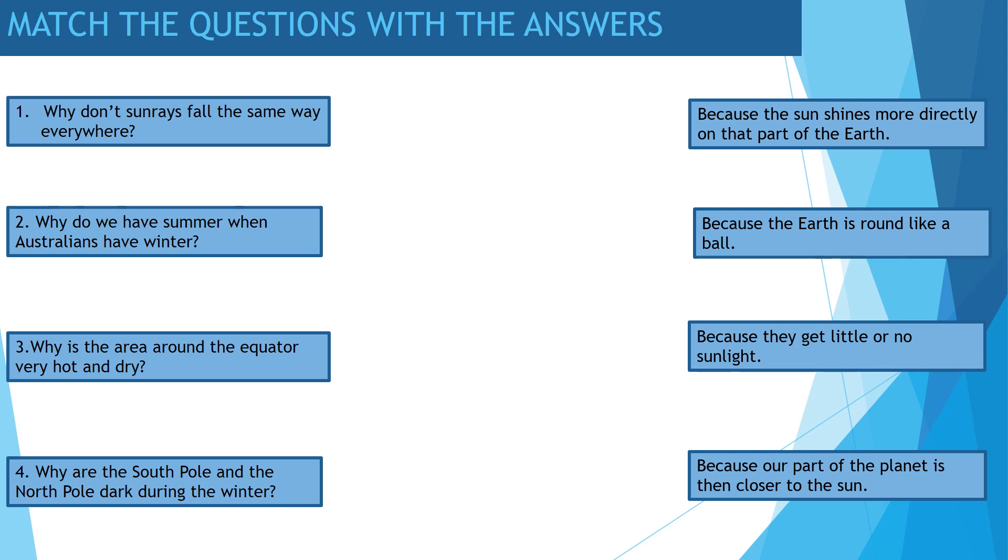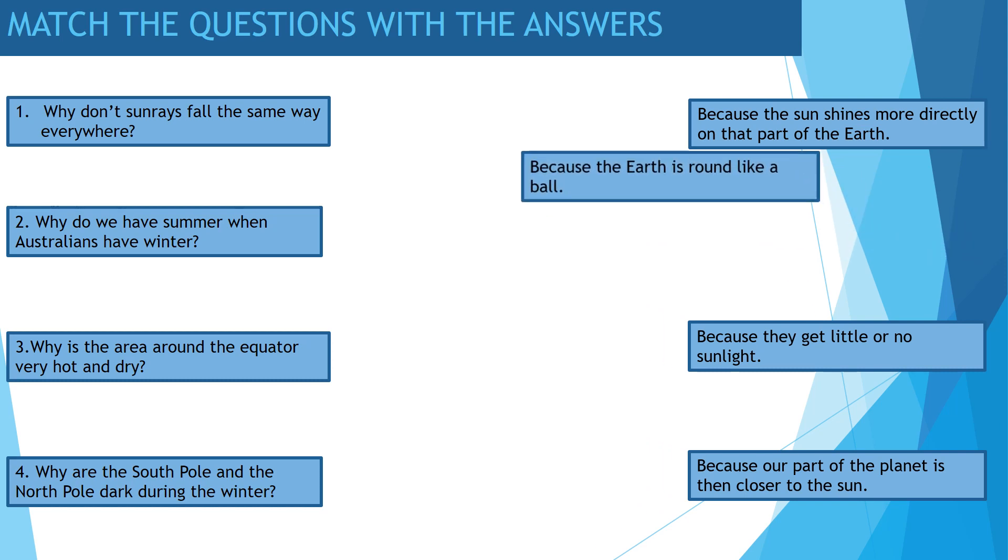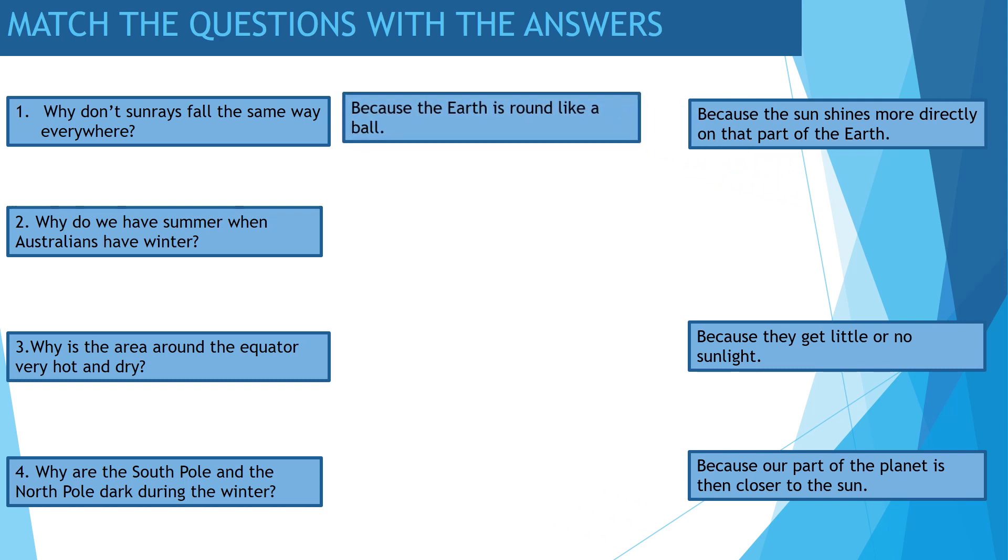Why don't sun rays fall the same way everywhere? Because the Earth is round like a ball.